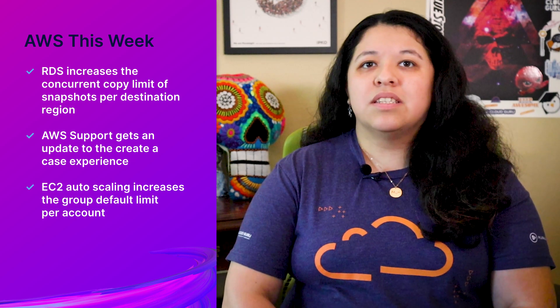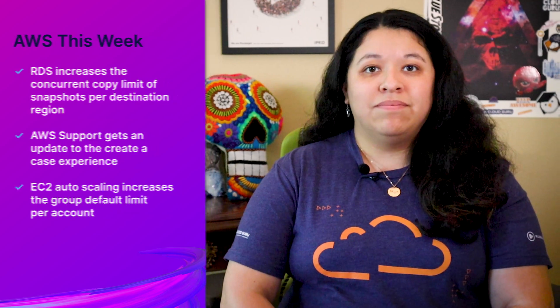Hello, Cloud Gurus, and welcome back to another AWS This Week, where we find out what goodies AWS have announced in the past seven days. I am your friendly neighborhood Jess Alvarez, and this week: RDS increases the concurrent copy limit of snapshots per destination region, AWS Support gets an update to the Create-A-Case experience, and EC2 Auto Scaling increases the group default limit per account. Stay tuned to hear the full story in this episode of AWS This Week.